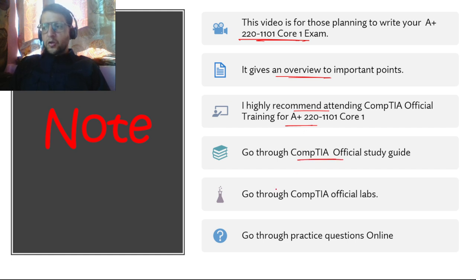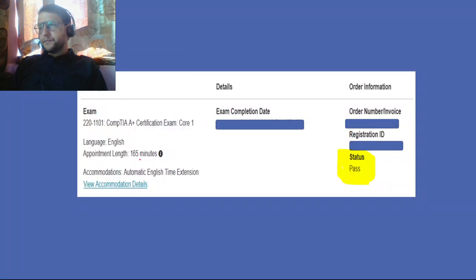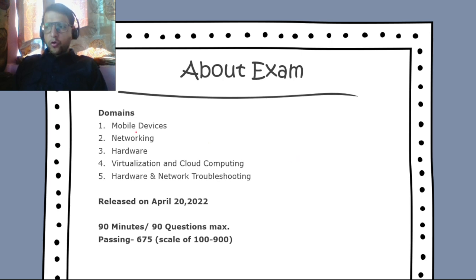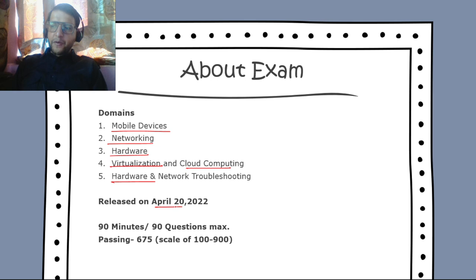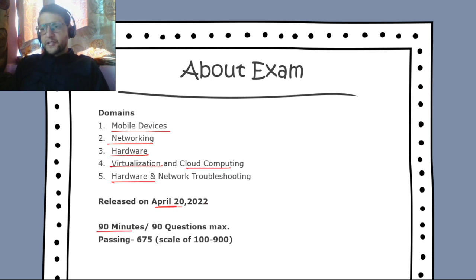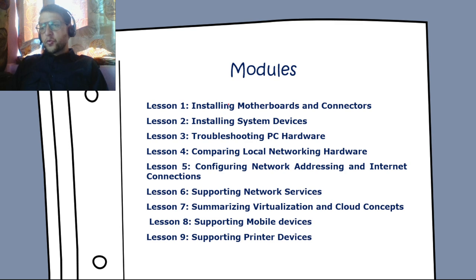Go through the CompTIA official study guide, official labs, and practice questions online — this is highly recommended. For Core One, the domains are: mobile devices, networking, hardware, virtualization and cloud computing, and hardware and network troubleshooting. The exam was released April 2022. You'll see 90 questions to answer in 90 minutes, and the passing score is 675.